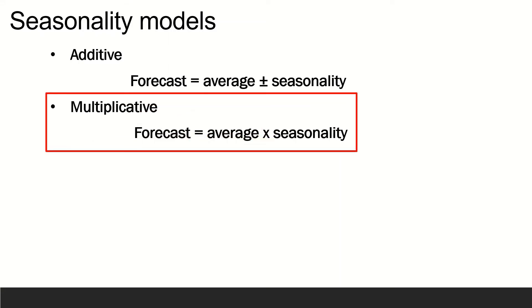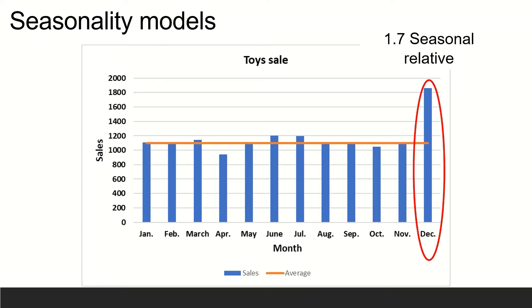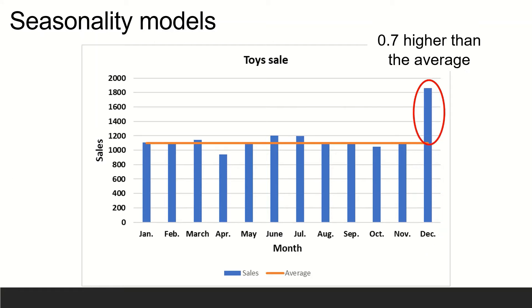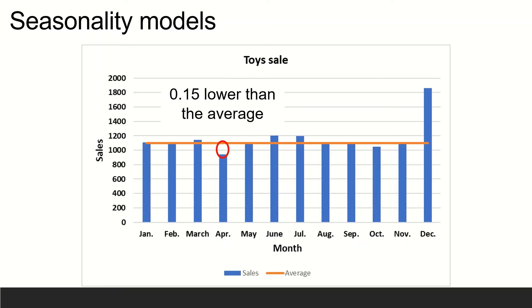The seasonal percentages in the multiplicative model are referred to as seasonal relatives or seasonal indexes. Suppose that the seasonal relative for the quantity of toys sold in December at a store is 1.7. This indicates that toy sales for that month are 70% above the monthly average. A seasonal relative of 0.85 for April indicates that April sales are 15% lower than the monthly average.